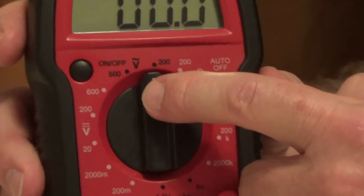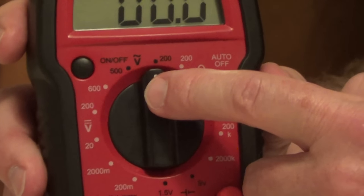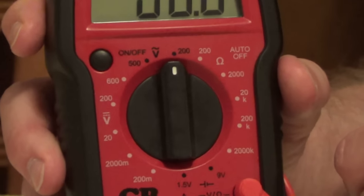If you were checking, let's say, a water heater that's 240 volts, you would put it on your 500 setting.